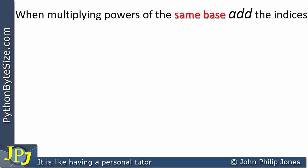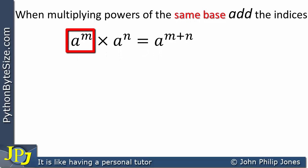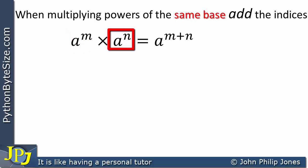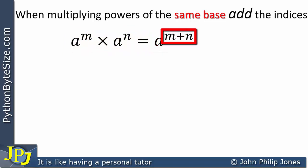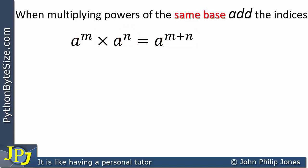When multiplying powers of the same base, add the indices. The general case is: if you have base a raised to the power of m, multiplied by the same base a raised to the power of n, you write down the base and add the indices to give a to the power of m plus n. Let's have a look at a more concrete example.